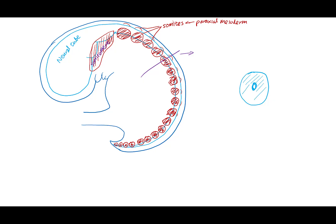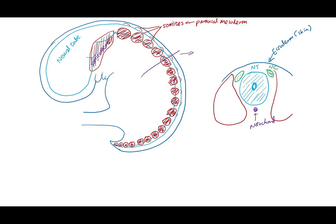In cross-section through the trunk of the embryo, we have the neural tube that is developing into the spinal cord. And on either side, dorsally, we have the neural crest cell populations, all under the ectoderm. Neurulation started at week 3 with the inductive signals from the notochord. On either side of the neural tube, notochord, and neural crests, we have the somites.